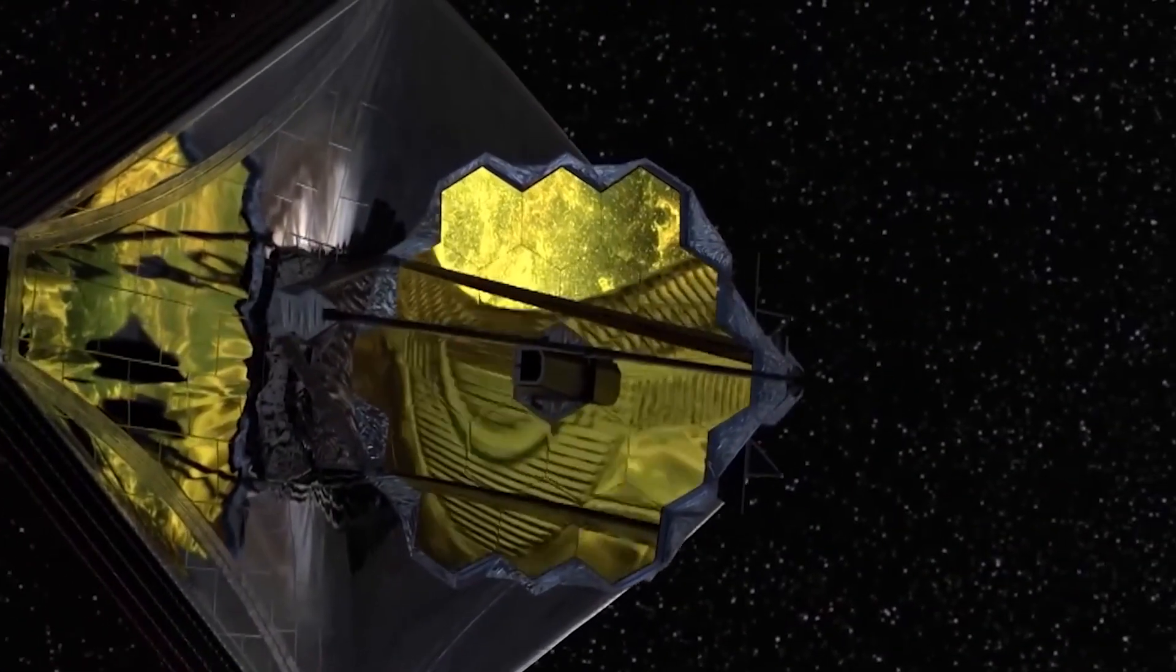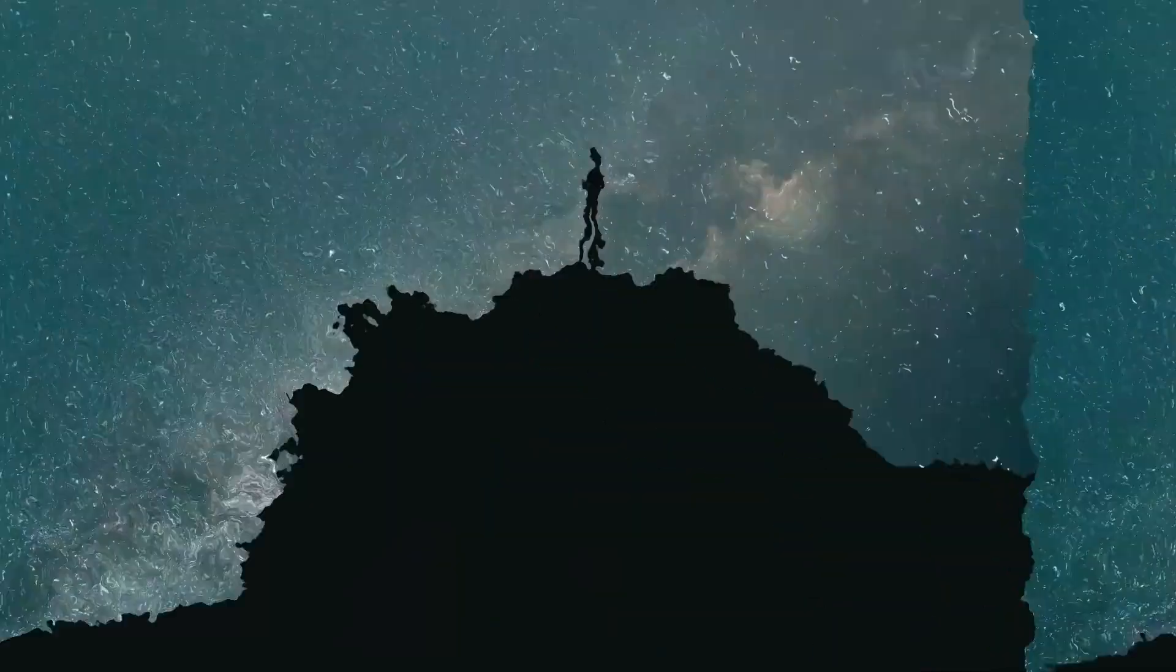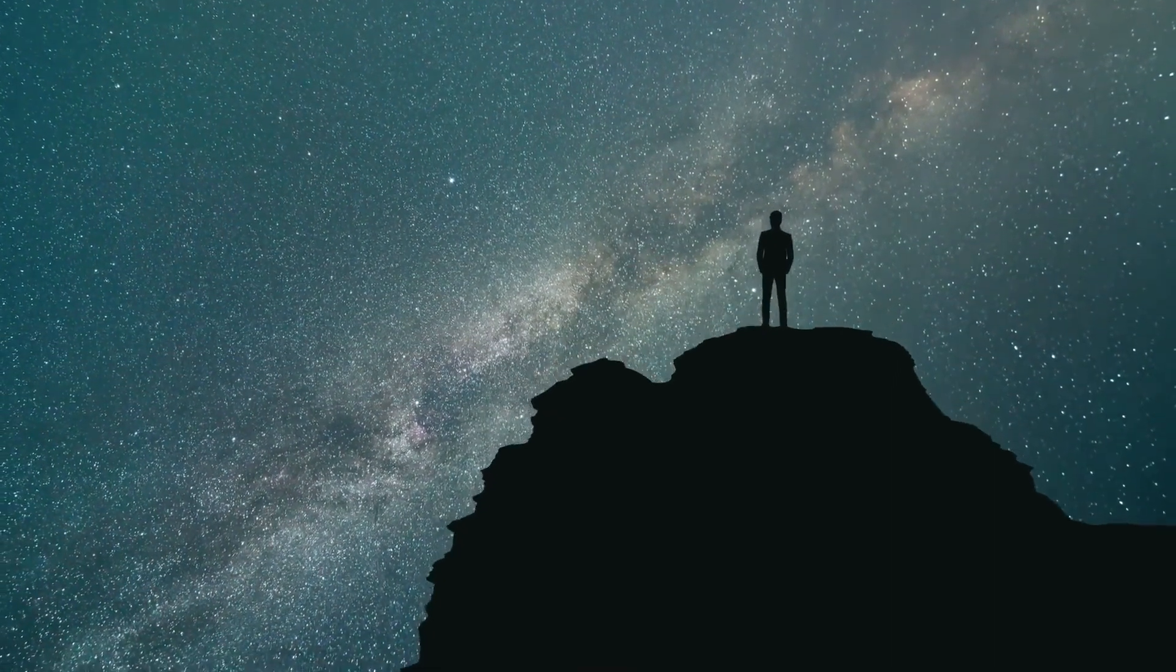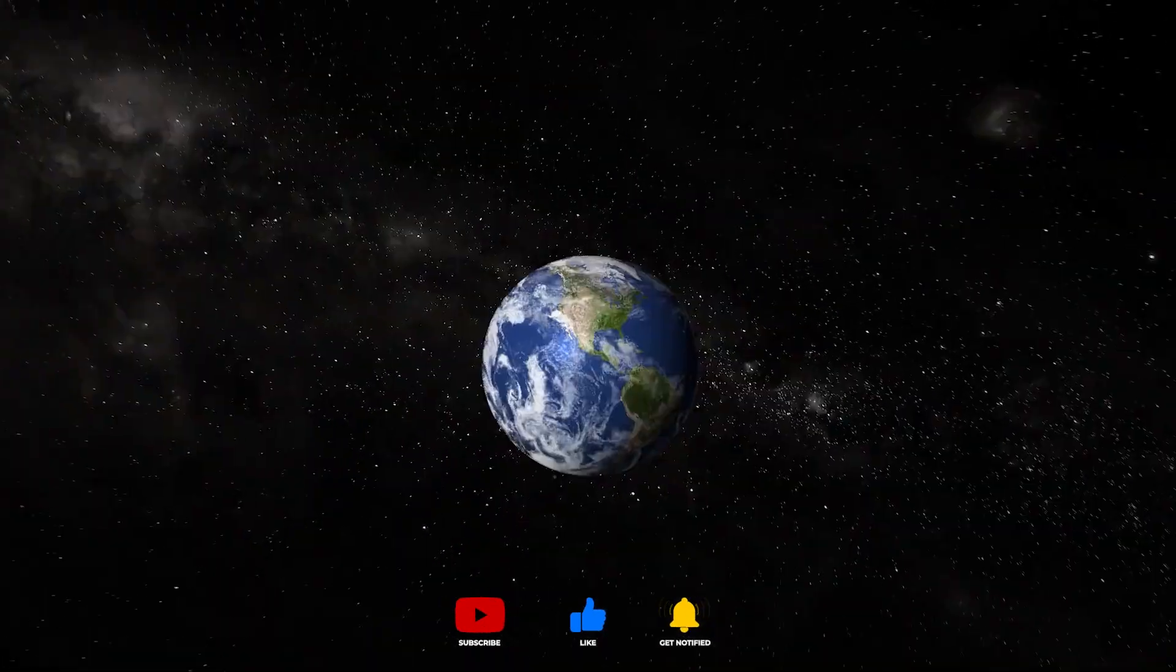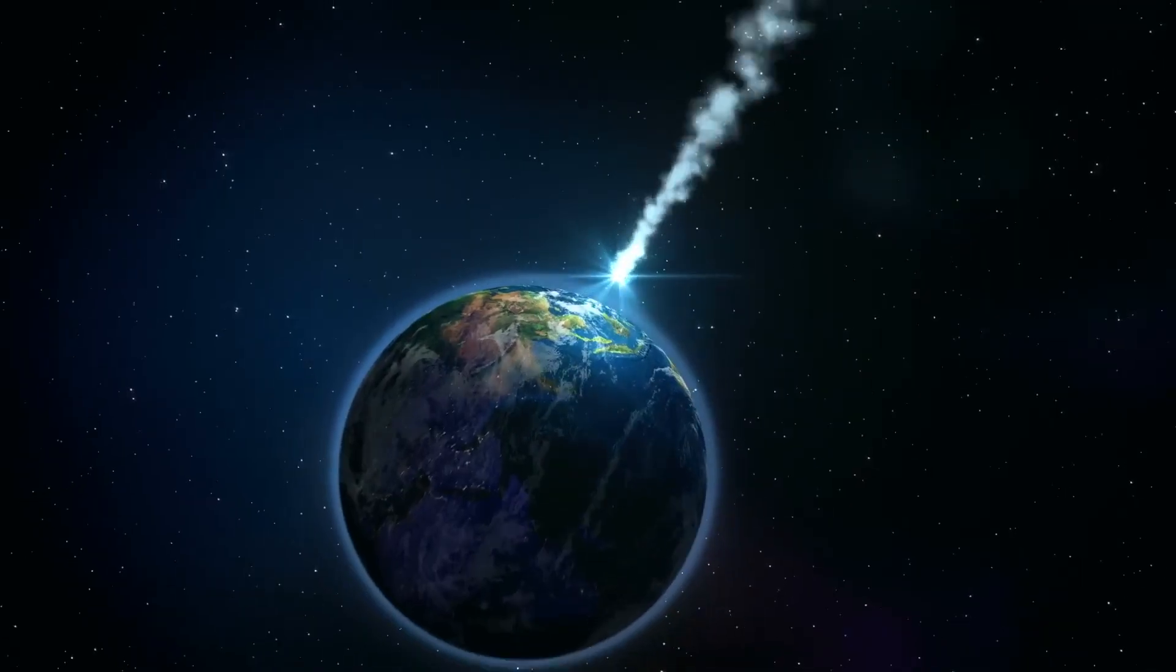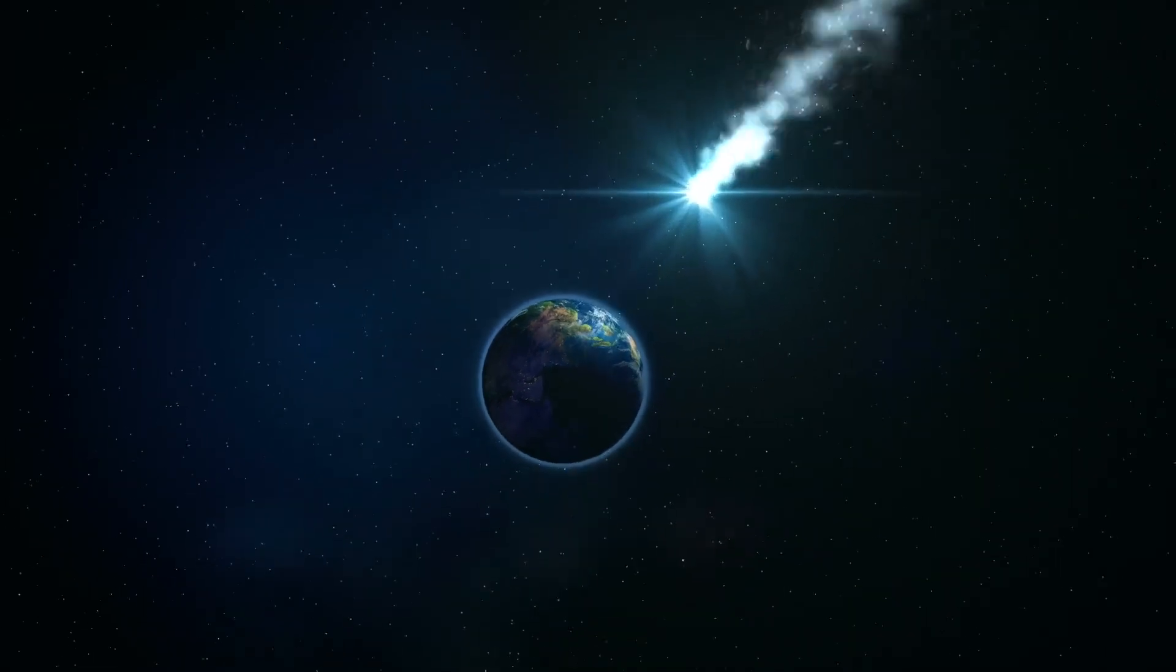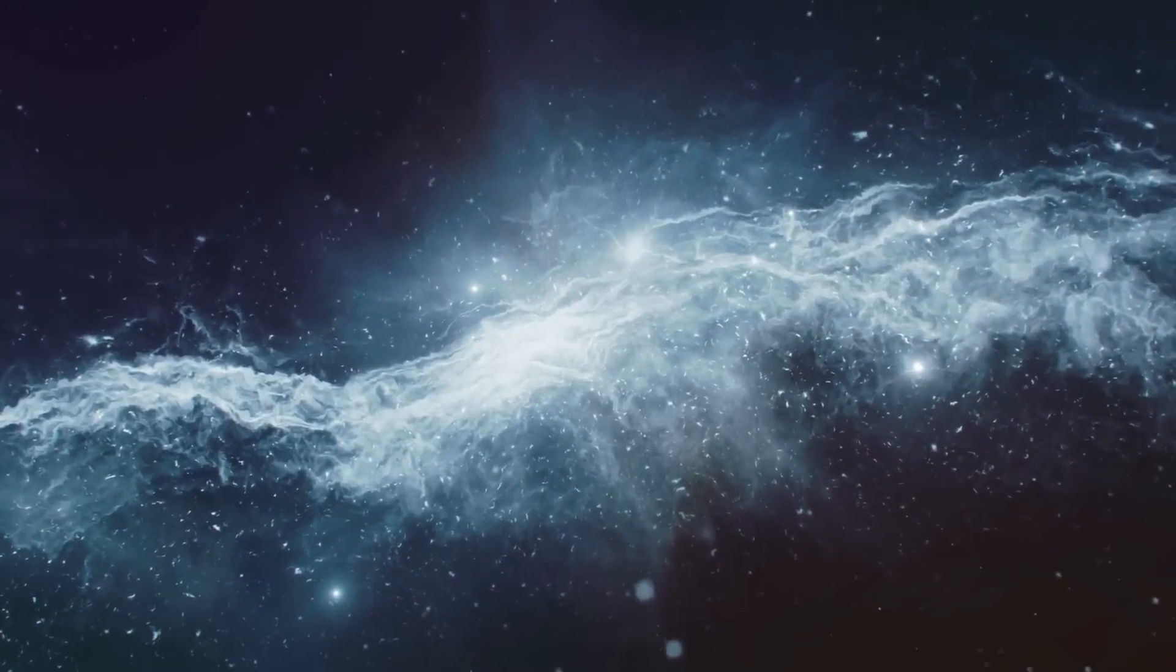The James Webb Space Telescope, combined with the brilliant minds of thinkers like Roger Penrose, allows us to push the boundaries of our understanding of the universe. This incredible telescope will help us uncover cosmic secrets that have remained hidden for eons. With its ability to detect various forms of light, from visible to infrared, it will reveal new insights into the evolution and structure of our awe-inspiring universe.